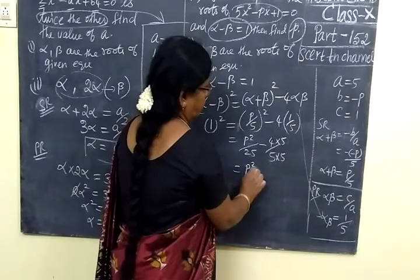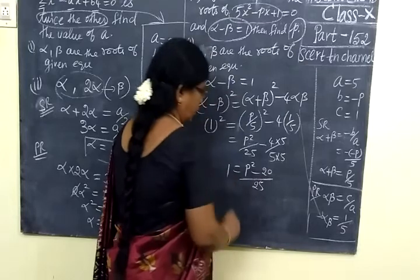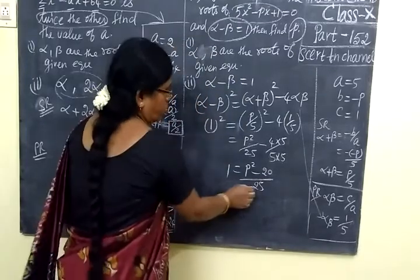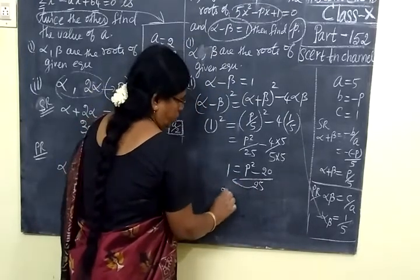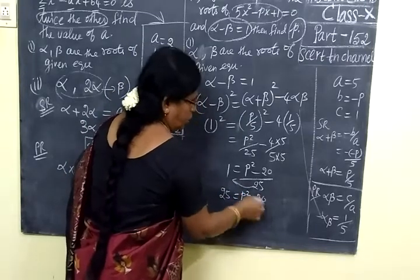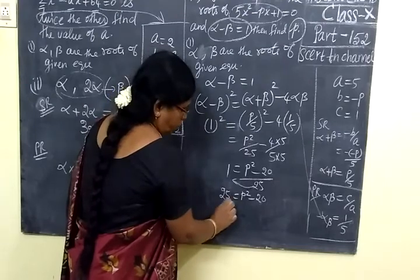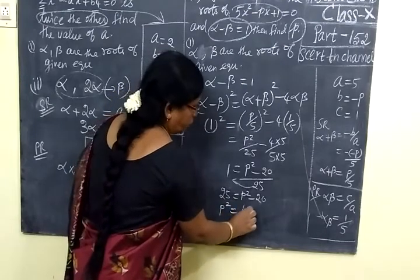So p squared minus 20 by 25 equal to 1. Take 25 to this side. So 25 equal to p squared minus 20. Minus 20 to the other side, plus 20. Therefore p squared equal to 45.